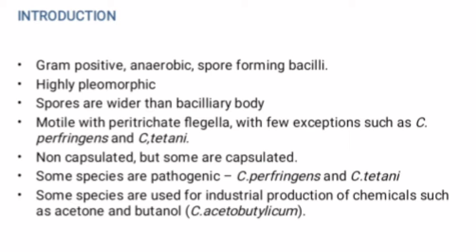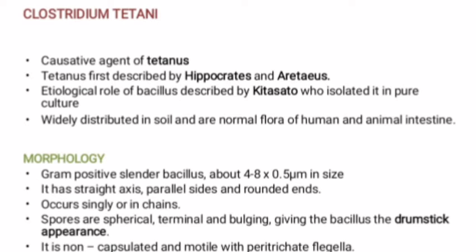The Clostridium genus consists of pathogenic strains such as Clostridium perfringens and Clostridium tetani. Clostridium perfringens is the causative agent of gas gangrene, and Clostridium tetani is the causative agent of tetanus. Some species like Clostridium acetobutylicum have industrial importance and are used for the production of industrial chemicals such as acetone, butanol, etc. Some species like Clostridium perfringens and Clostridium tetani are normal flora of the human and animal intestine.